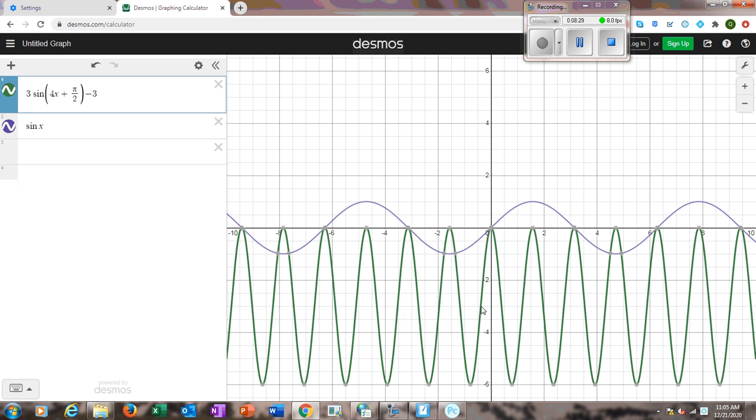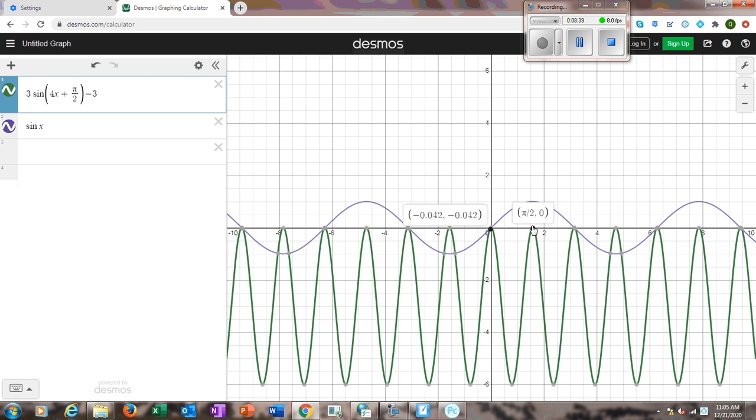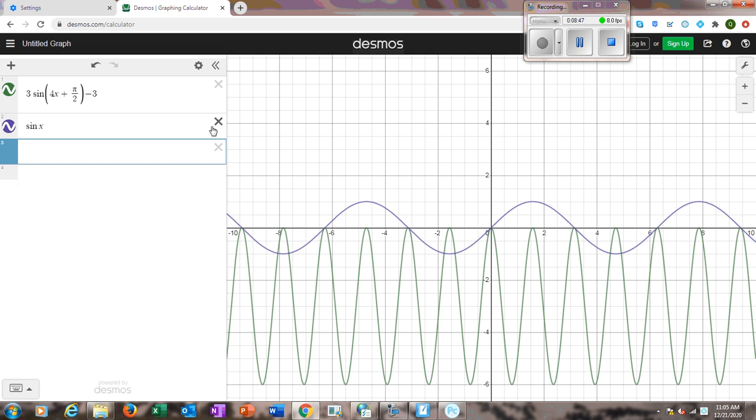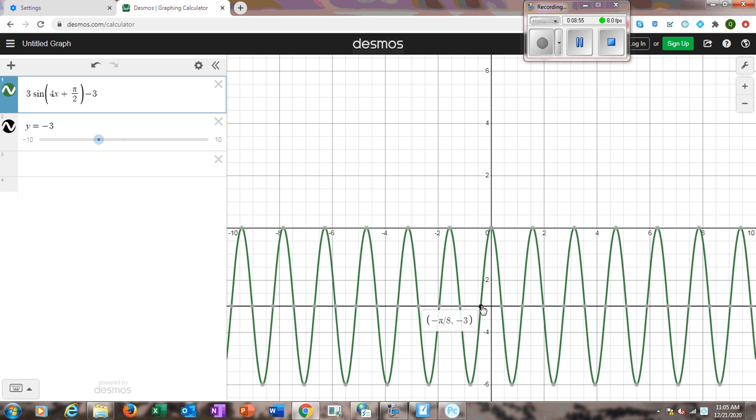It should be right in here. If I actually did a line at y equals negative 3, it might give us the point where they intersect. There you go. Negative π over 8 and negative 3.